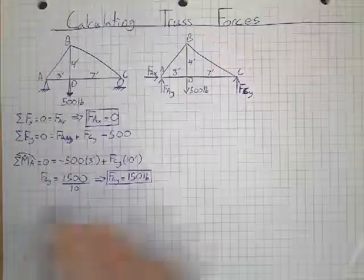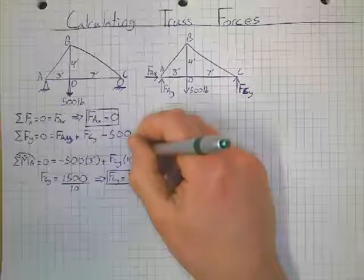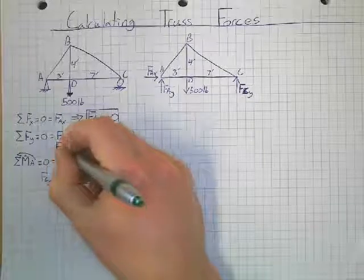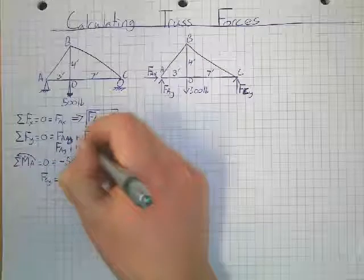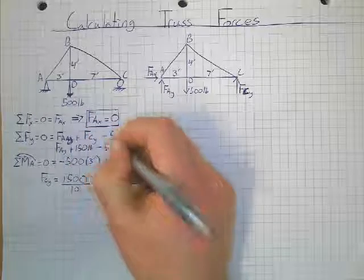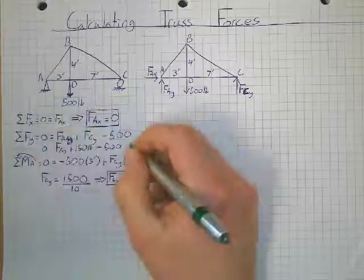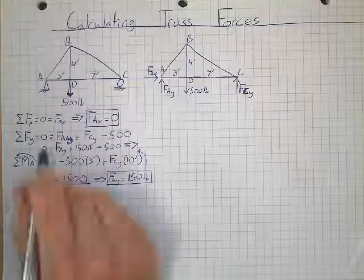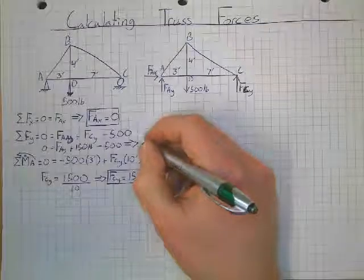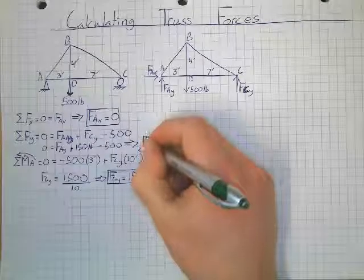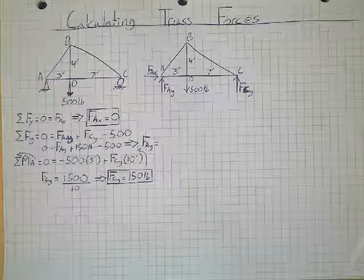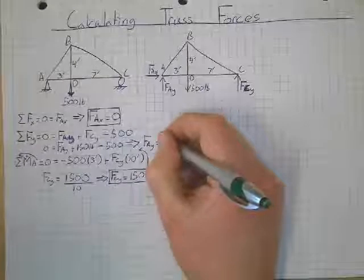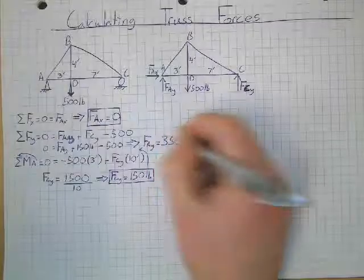And finally, I can take and plug that back in up here. And I get FAY plus 150 pounds minus 500 pounds is equal to zero. And so if I solve for that by combining these two and moving them over there, I would end up with FAY being equal to 350 pounds. So I got FAY equal to 350 pounds.